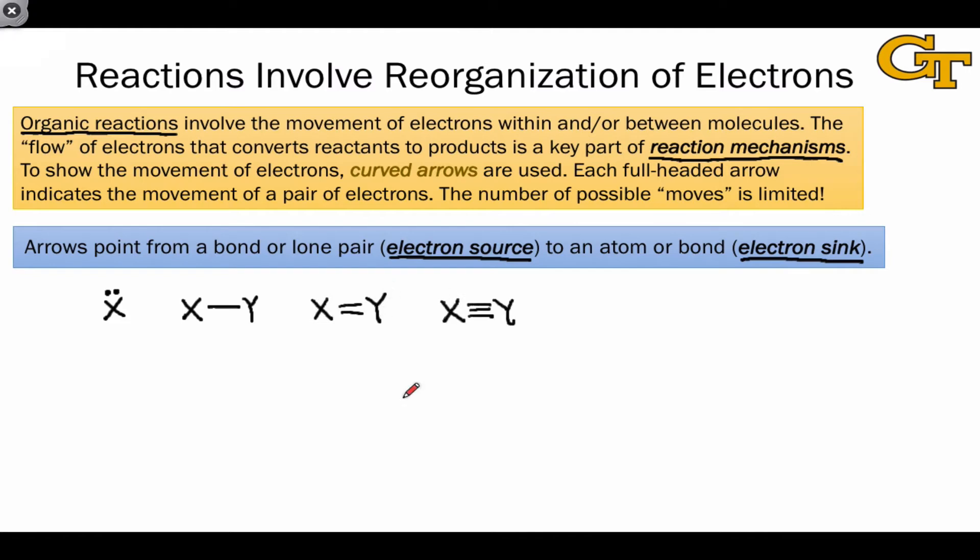These are the only possible electron sources because these are the only locations in molecules where valence electrons, the most reactive electrons, are located. And so, every curved arrow flow is going to start with flow from a source, be it a lone pair, a single bond, a double bond, or a triple bond.